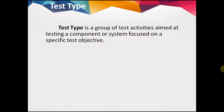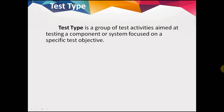The definition of test type: a test type is a group of test activities aimed at testing a component or system focused on a specific test objective. We can see that test type tests a separate component or the whole system, and the test objective of every test type will be unique.